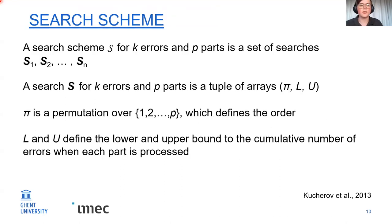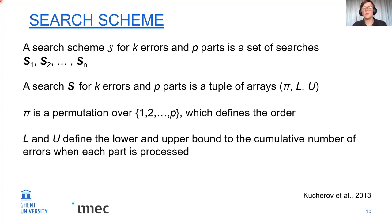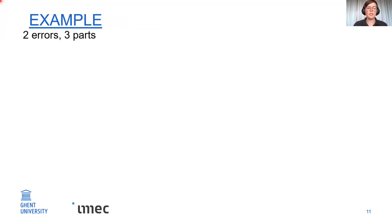For the theoretical definition, a search scheme is a set of searches for k errors and p parts. Each search is a tuple of arrays pi, l, and u. Pi is a permutation over 1 to p, defining the order in which parts of your pattern are processed. l and u define lower and upper bounds — l tells you how many errors you need to have at least at this point, and u tells you how many errors at most are allowed.